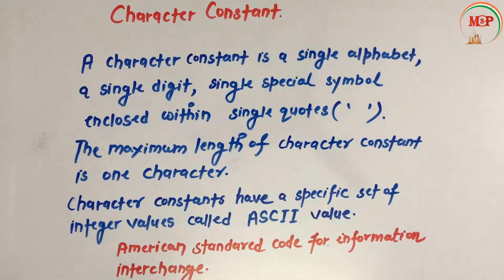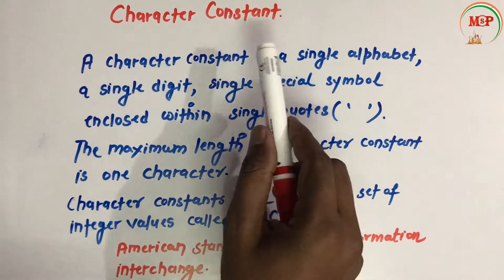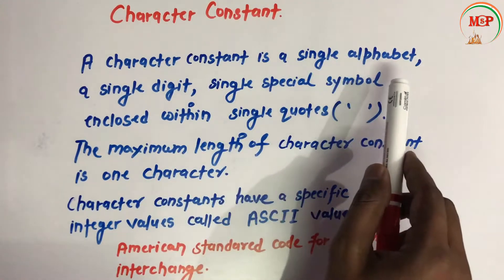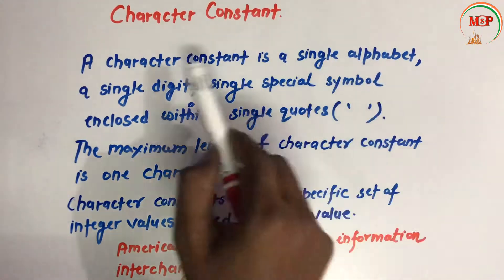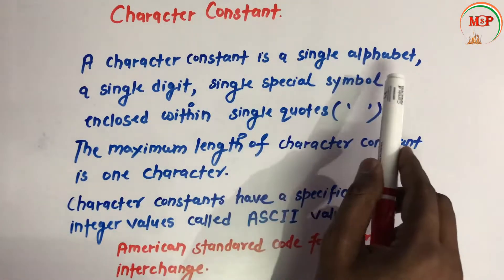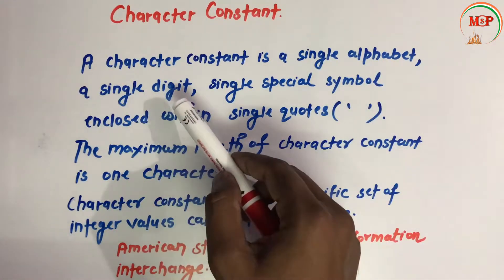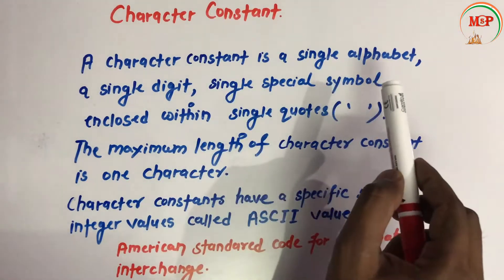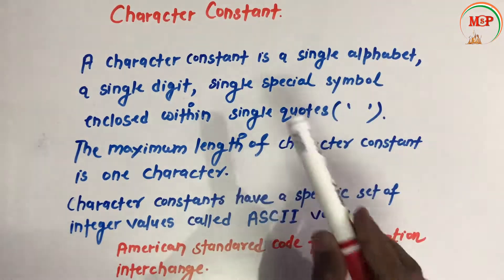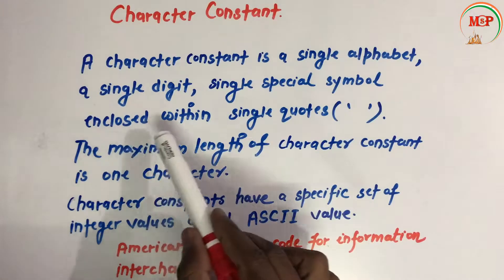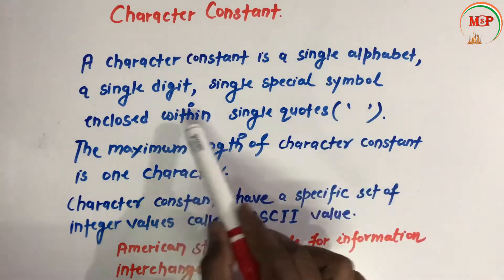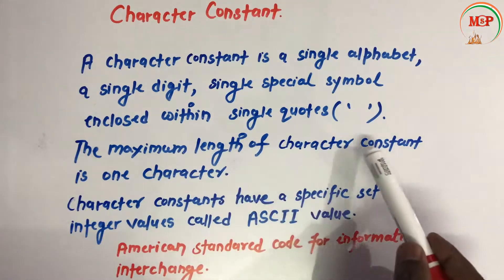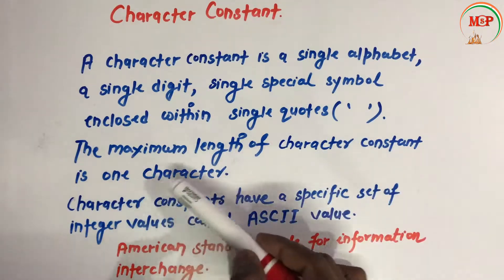Now the next one is character constant. A character constant is a single alphabet, a single digit, or a single special symbol enclosed within single quotes. The maximum length of a character constant is one character.